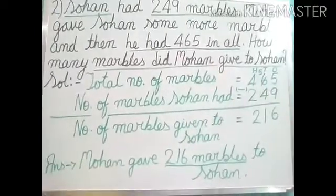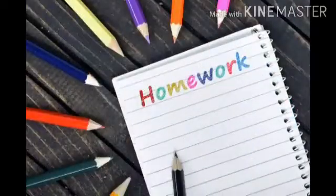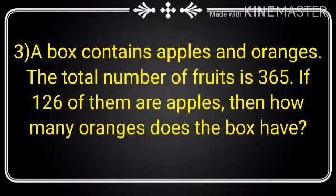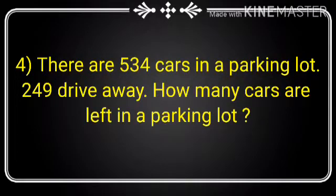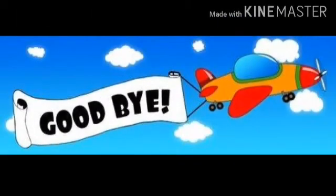Time to note down the homework. Number 3: a box contains apples and oranges. The total number of fruits is 365. If 126 of them are apples, then how many oranges does the box have? Number 4: there are 534 cars in a parking lot; 249 drive away — how many cars are left? Try to do all four word problems on your own. That is all for today's class. Goodbye.